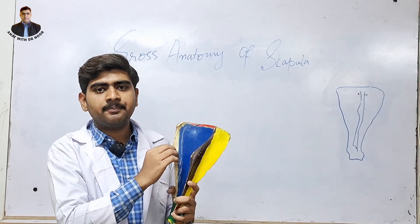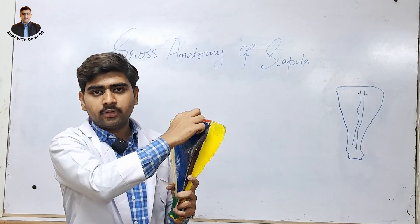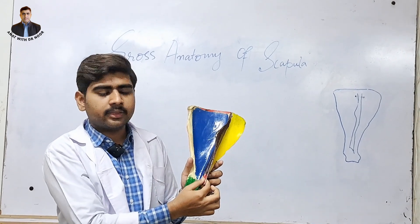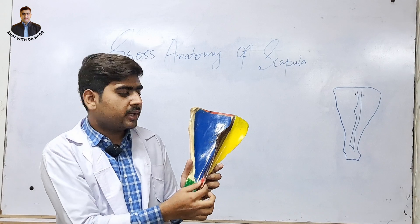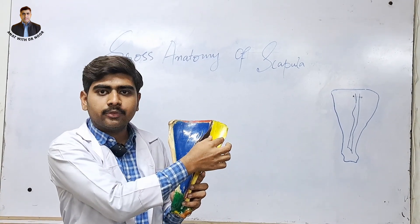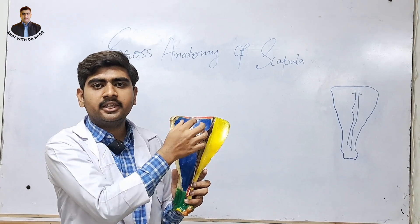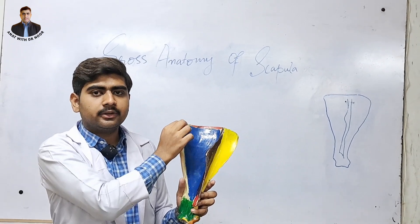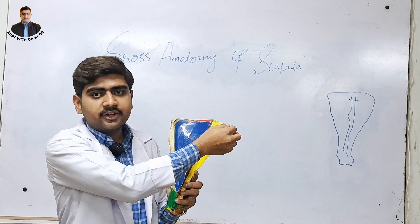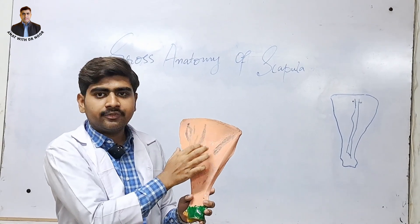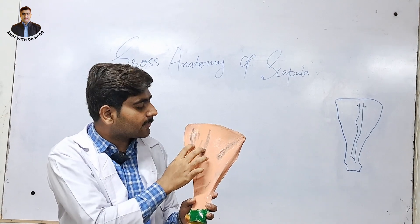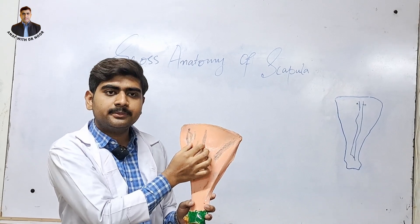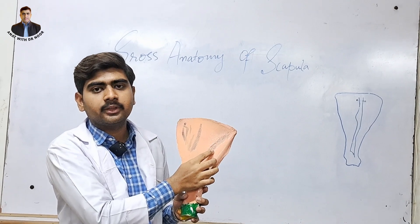Now we are going to discuss the muscles of the scapula. There are rhomboid muscles at the dorsal border, bicep brachii muscles, and trapezius muscle at the spine. Deltoid muscles are attached at the acromion process. At the supraspinous fossa there are supraspinatus muscles, and at the infraspinous fossa there are infraspinatus muscles. There are teres minor muscles on one side and teres major muscles on the other. On the rough surface of the medial aspect, the serratus thoracis muscles are attached.